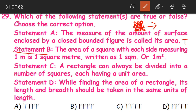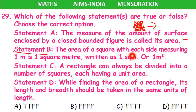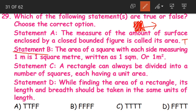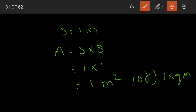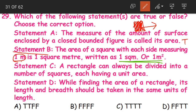Coming to statement B: the area of a square with each side measuring 1 meter is 1 square meter, written as 1 sqm or 1 meter square. The side of the square is 1 meter. Area = S into S = 1 into 1 = 1 meter square. This is how we find out the area, and even in the statement the same numbers are given. So statement 2 is also true.